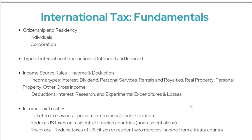Income tax treaties: the US has the best network of tax treaties, which makes it possible for Americans to obtain foreign tax rates and foreign tax credits. This helps to prevent international double taxation, reduce US tax on foreign residents, and works the same reciprocal way to reduce taxes of US citizens or residents who receive income from a treaty country.